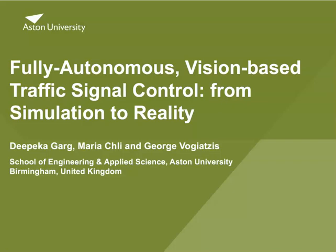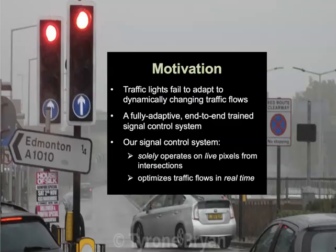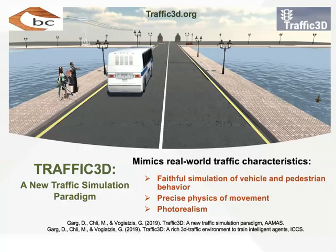Let's begin with some motivation. Existing signal control methods fail to cater to the dynamically changing traffic flows. To solve this problem, we used deep reinforcement learning to create an autonomous signal control agent that perceives the prevailing traffic conditions using live pixels from the intersections and adapts to the actual traffic conditions in real time. Due to safety and economic reasons, the signals cannot be controlled using deep reinforcement learning in the real world, as these agents need millions of interactions with their environment to learn a suitable policy.